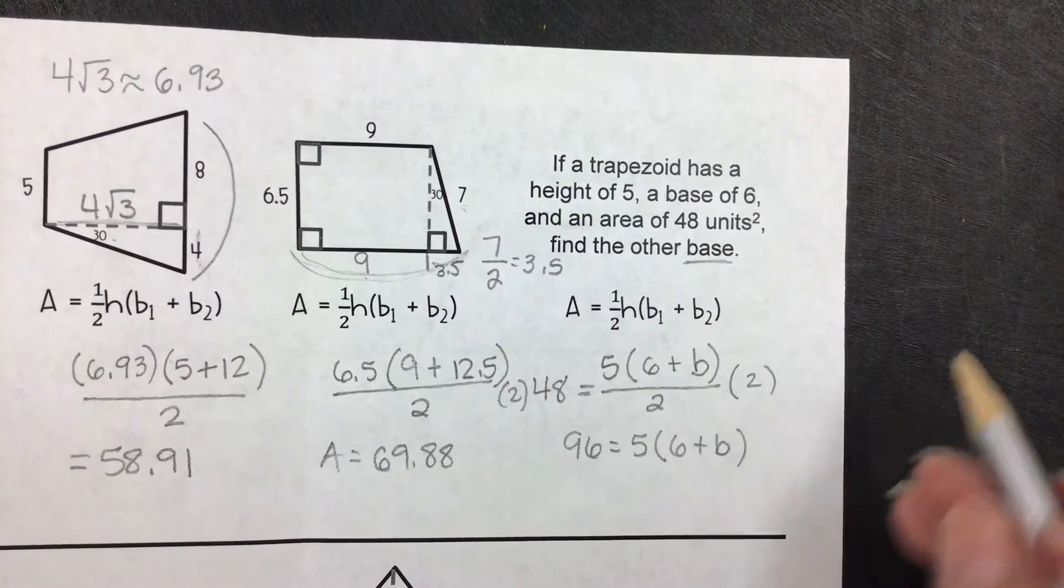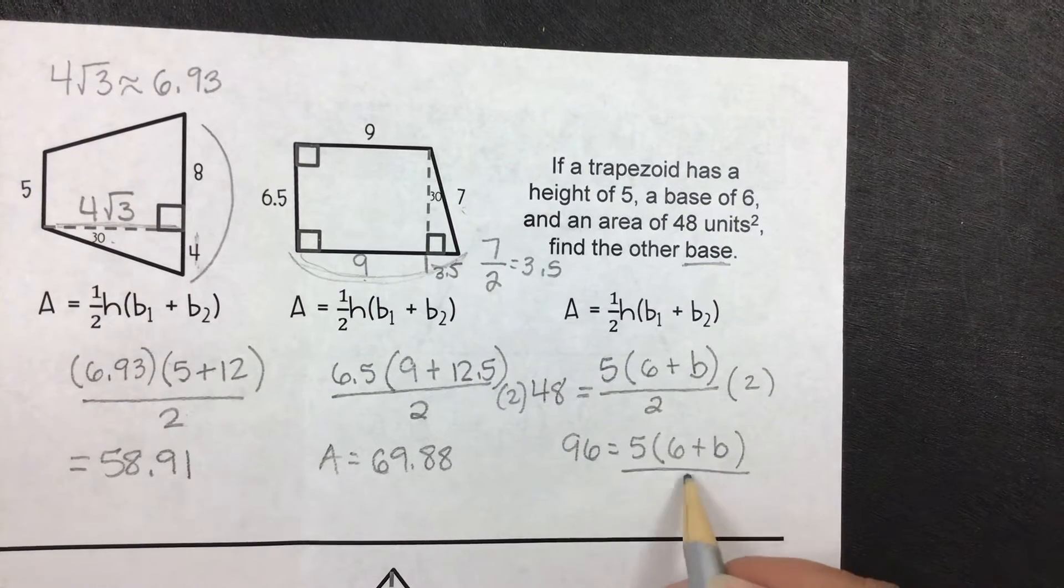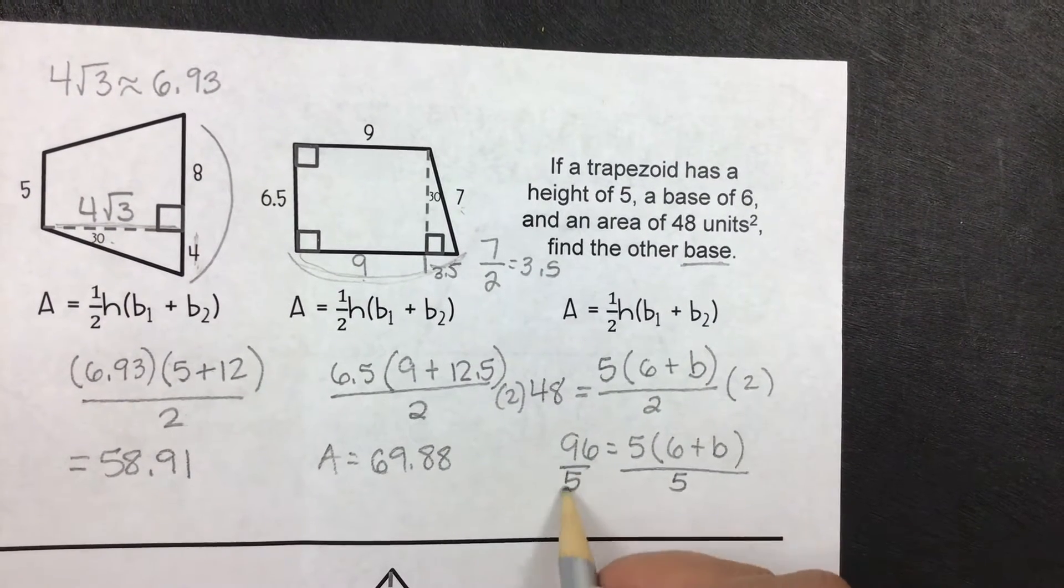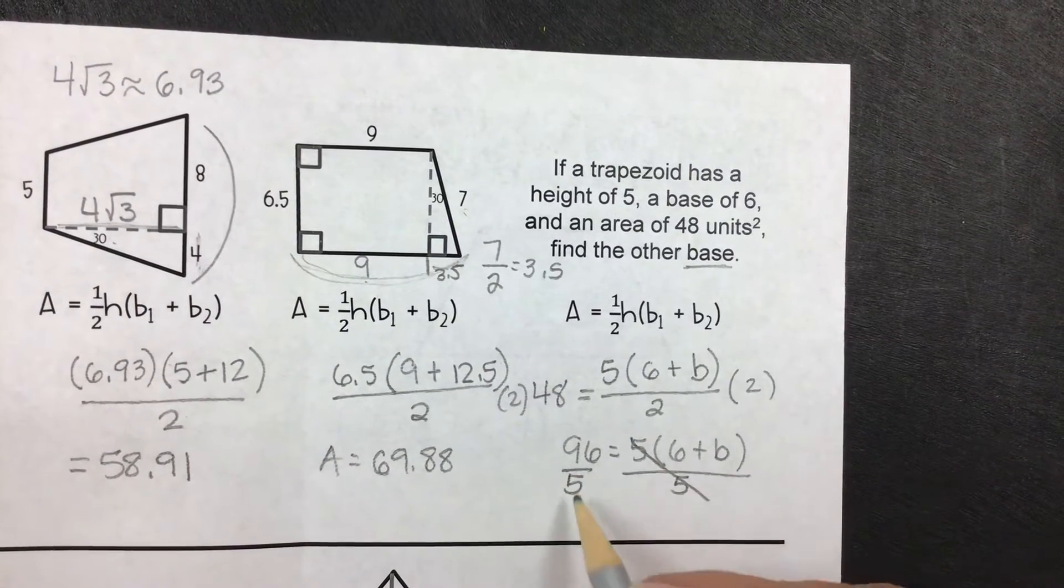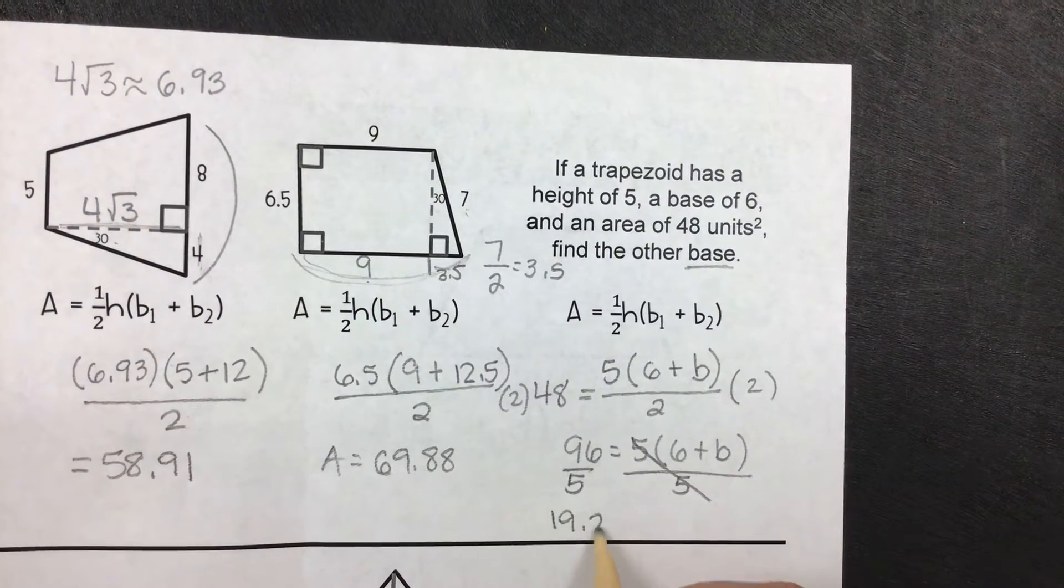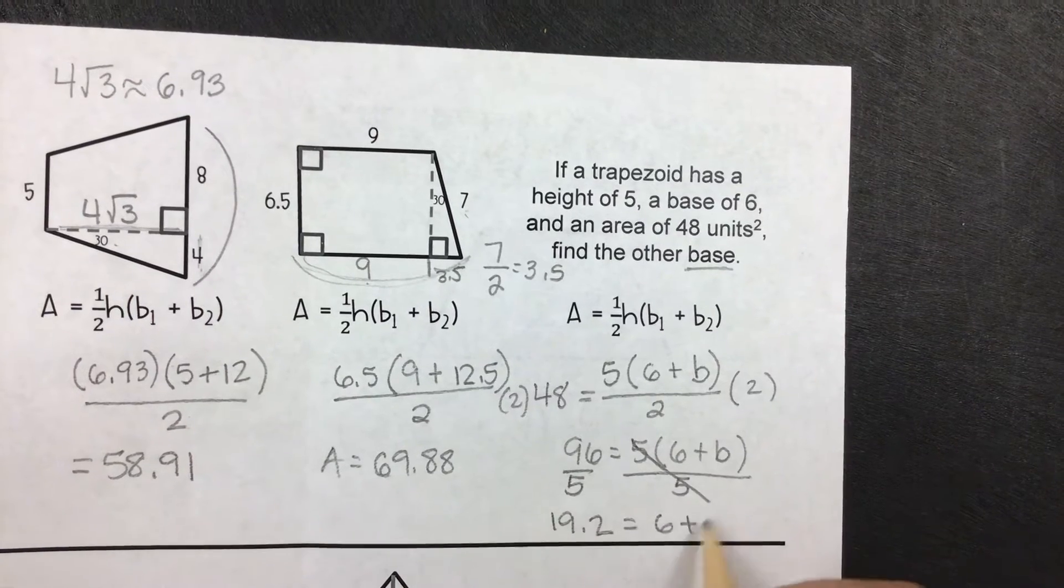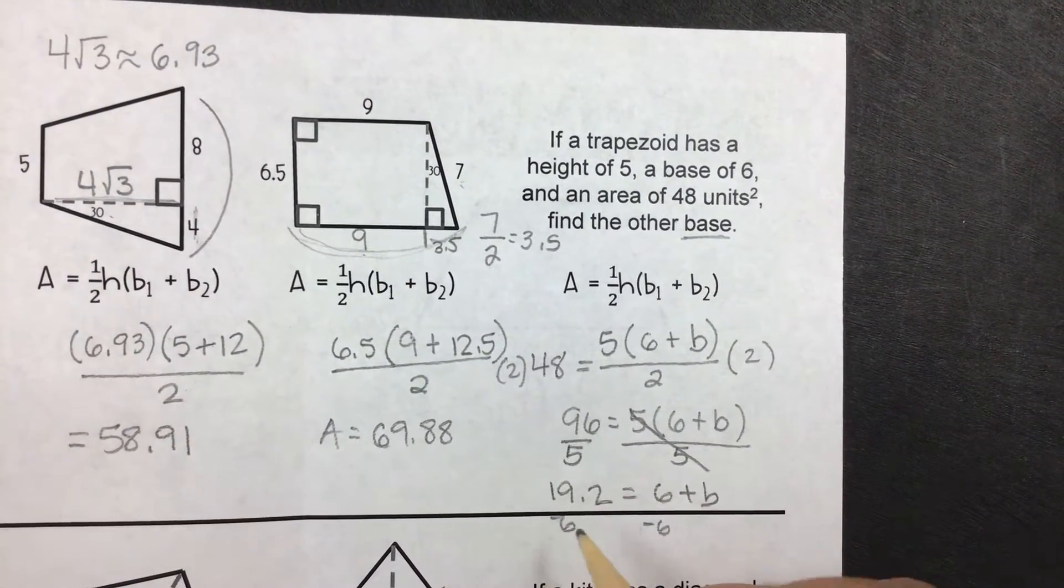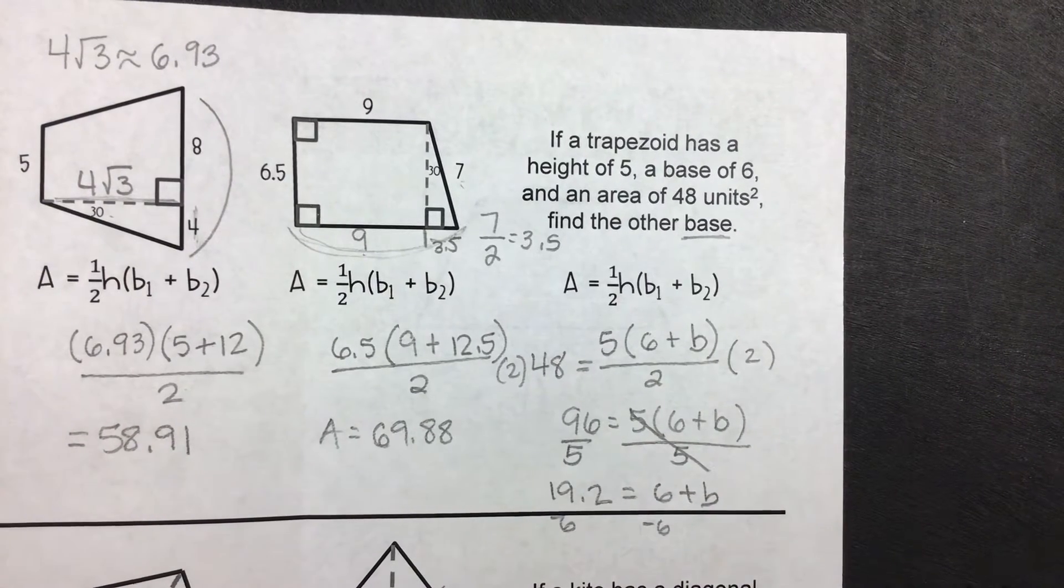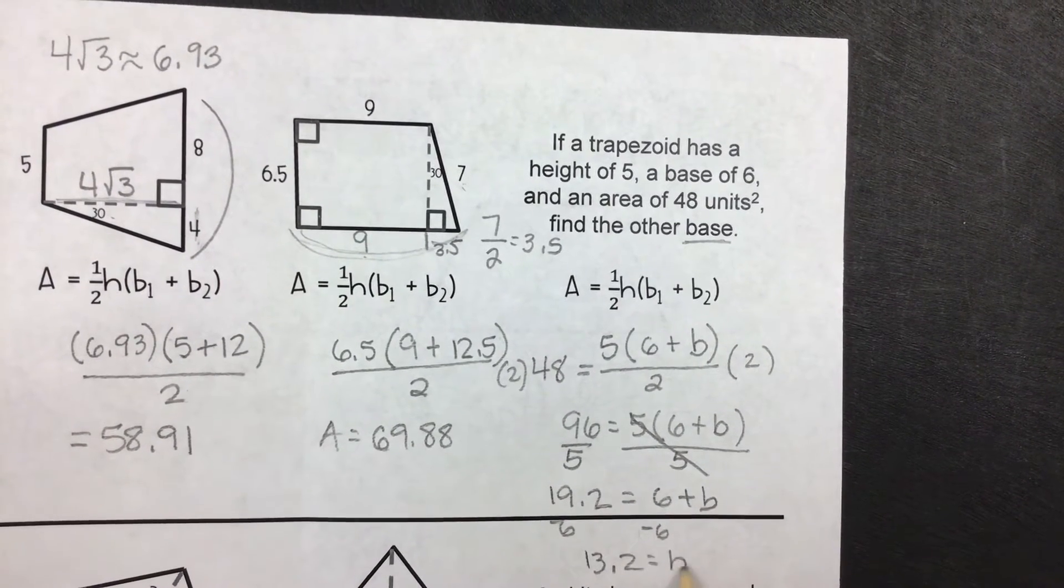You could do the distributive property. What I'm going to recommend that you do, though, is go ahead and divide by 5. That would still cancel that out. You have 19.2 is equal to 6 plus b, and then minus 6 to both sides. 13.2 is equal to b.